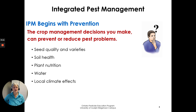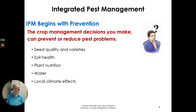IPM begins with prevention. The crop management decisions you make can prevent or reduce pest problems. Seed quality and varieties that you use, maintaining great soil health and plant nutrition, providing water, and even local climate effects — the moisture and humidity in the area — all have an effect on pests. Think about what you can control: can you keep your crop healthy? That will reduce or prevent pest problems.